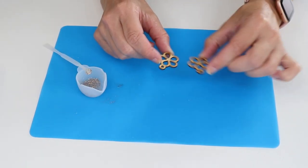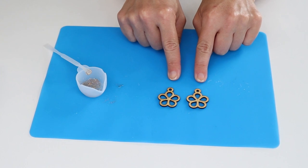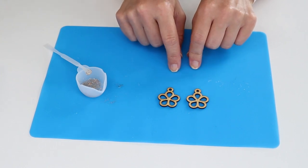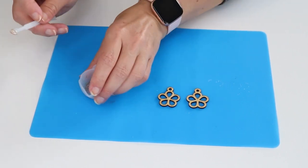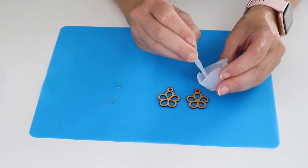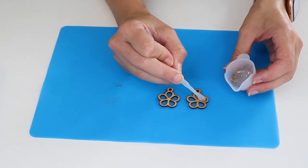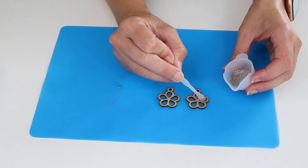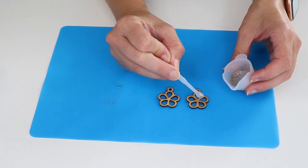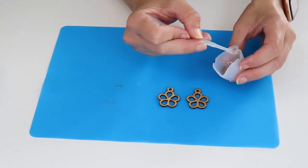Now I've got my earrings here and when I put them on the silicone mat the resin is not going to stick to it. Then I can just fill up the spaces, being careful not to get any of the resin on the outside of the wood. I just want it on the inside.